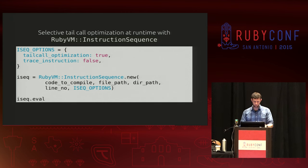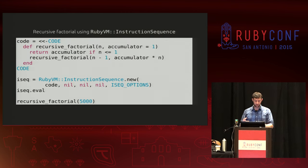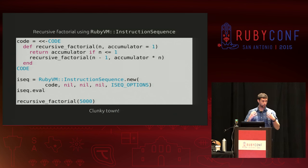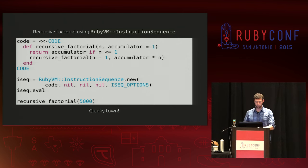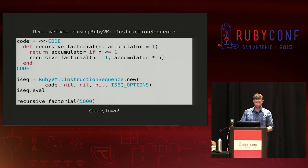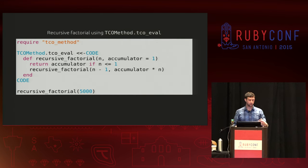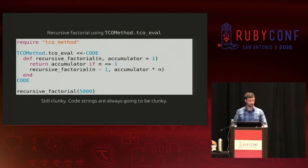Using RubyVM::InstructionSequence to selectively compile code at runtime: one clunky aspect is you have to pass raw code strings. Hold on to the ISeq options constant at the top — it's really the same thing we did in the diff, turning on tail call optimization and turning off the trace instruction. I tried to encapsulate some of the work of generating that instruction sequence object, so you need a little less knowledge of what's required — though code strings are always going to be clunky.